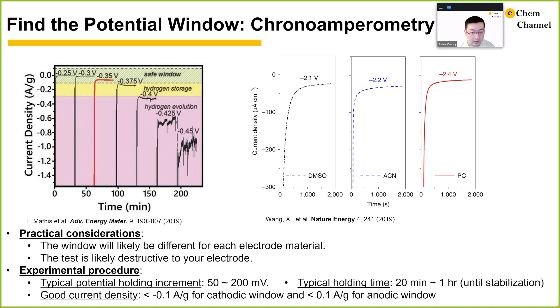where the authors use -50 microamp per centimeter squared as the cutoff to determine the cathodic limit potential in dimethyl sulfoxide, acetonitrile, and propylene carbonate-based lithium TFSI electrolytes.